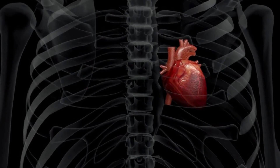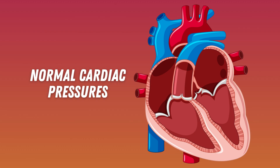Well, this goes back to understanding pressure gradients. First, let's look at the intracardiac, pulmonary, and aortic pressures — these are considered the normal pressures within each compartment. These numbers may vary slightly between sources. Working our way through the heart from beginning to end: the right atrium has pressures of 2 to 6 mmHg. Moving into the right ventricle, we have an RV systolic pressure of 15 to 30 and RV diastolic pressure of 0 to 8. From the RV, blood is then pumped into the pulmonary artery. The normal PA systolic pressure is 15 to 30 and the diastolic is 5 to 15.